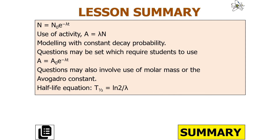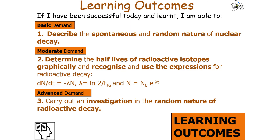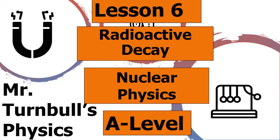If we've learned successfully today, we should be able to use N equals N₀ e to the minus lambda t, recognise that activity equals lambda N, use A equals A₀ e to the minus lambda t, and apply the half-life equation t-half equals ln(2) over lambda. We should also describe the spontaneous and random nature of nuclear decay and determine half-lives graphically. Thank you for watching this lesson on radioactive decay in AQA A-level physics — have a lovely day.